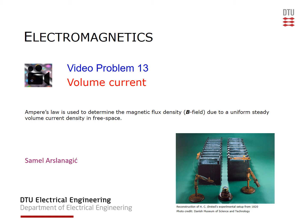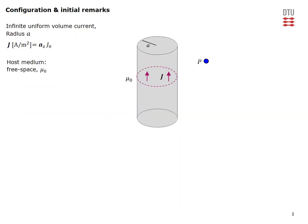Welcome to video problem 13. The objective here is to use Ampere's law to get the B field for a uniform and steady volume current density located in free space. The configuration is a cylindrical wire of radius A, infinitely long, carrying a uniform volume current density. It is located in free space with permeability mu0, and the objective is to determine the B field at observation point P, located both inside and outside the volume current.